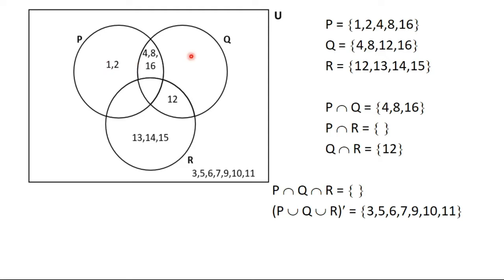Now we look at set Q. The members in set Q are 4, 8, 12 and 16. But 4, 8 and 16 are shared between P and Q, and 12 is shared between Q and R. So there are no members that belong to Q alone — that region will be empty.